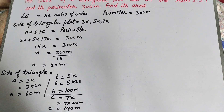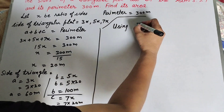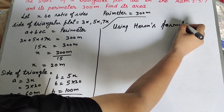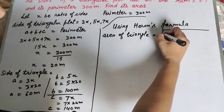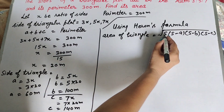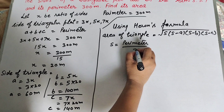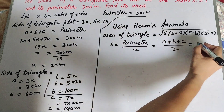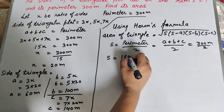Now we find the area of the triangle using Heron's formula: Area = √(s(s−a)(s−b)(s−c)), where s is the semi-perimeter. s = perimeter / 2 = (a + b + c) / 2 = 300 / 2 = 150 meters.